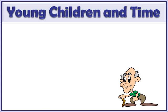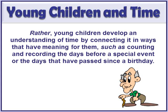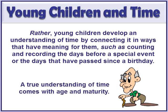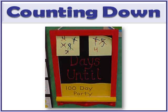Children don't learn these concepts of time by watching the teacher during calendar math, by counting the number of days in school, or by finding all the days that begin with the letter T. Teachers have good intentions, but developmentally students just aren't there yet. Instead, young children develop understanding by connecting time in ways that are concrete and meaningful to them — such as counting and recording the days until a special event or days since their birthday. A true understanding of time only comes with age and maturity. One example is a countdown chart — 'days until the 100-day party' — where students start at 10 and cross off each day, helping them build the understanding that time passes.